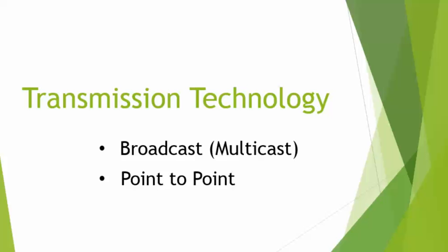The other transmission technology is point-to-point. So to recap: the first is broadcast — to everybody; multicast — to a set of receivers. Now point-to-point is much easier to understand. This is when you send information to a specific receiver, from one point directly to another point.